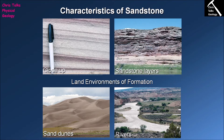Sand dunes obviously form in desert environments, and we've already discussed how the concentration of sand-size sediments in these desert environments is a reflection of the fact that the sediment is being moved by the wind. In desert environments, the sand gets transported around for a very long time because the wind blows it in all directions, which means the sandy sediment is going to be quite well rounded and often very well sorted as well, giving us a hint about the formation of the sandstone.